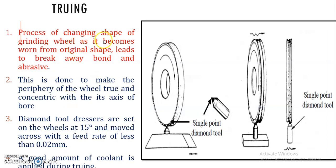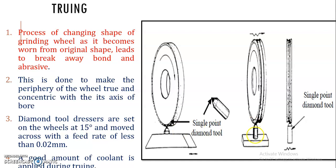Next, what is truing? Truing is the operation to bring the grinding wheel concentric with its axis. It is the process of changing the shape of the grinding wheel as it becomes worn from its original shape, and it breaks away the bond and abrasive. Because of glazing and loading, the grinding wheel can become uneven and no longer show a true circular shape. To restore the true circular shape of the periphery, we bring it concentric with the axis of the bore using a single point diamond tool — this is the truing operation.